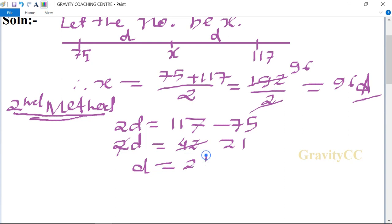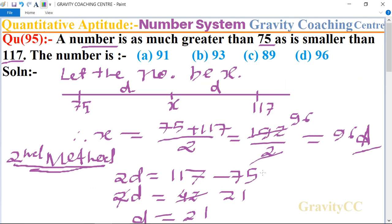So therefore x equal to, x equal to 75 plus d, equal to 75 plus 21, so 96 which is the required answer. So the option d is the right answer.